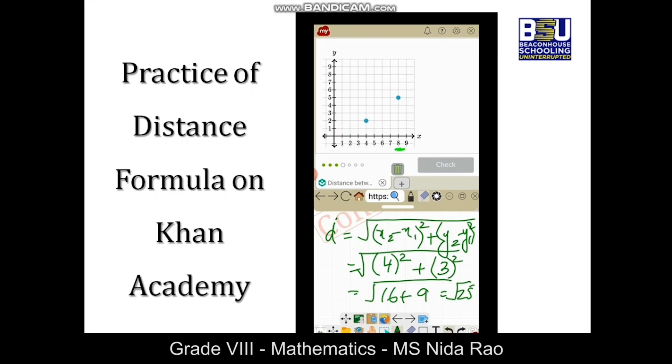√25 we know that is 5. Check your answer. Yes, it's correct. Now we have seen that if only the coordinates are given, how to find out the distance between those coordinates, or if the graph is given and points are given on the graph, then in that case how we will calculate the distance between two points.